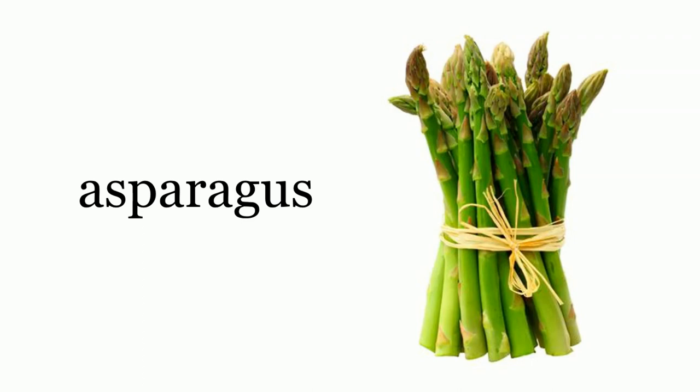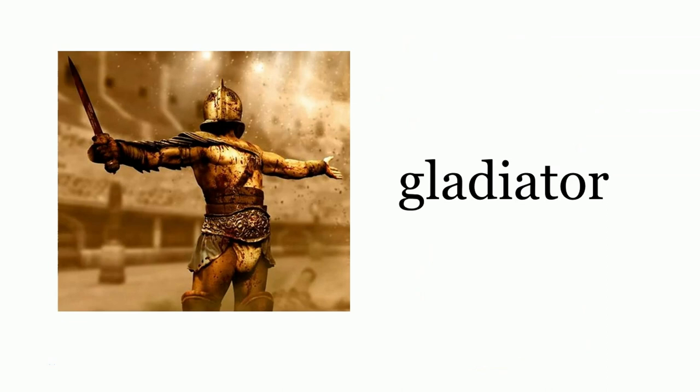Asparagus — delicious. That's pretty straightforward. Gladiator. Why is a gladiator called a gladiator? Because he has a gladius. A gladius is a sword. Therefore, a gladiator is someone qui pugnat cum gladio — who fights with a sword.